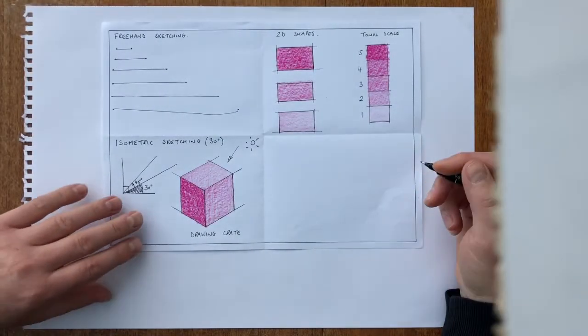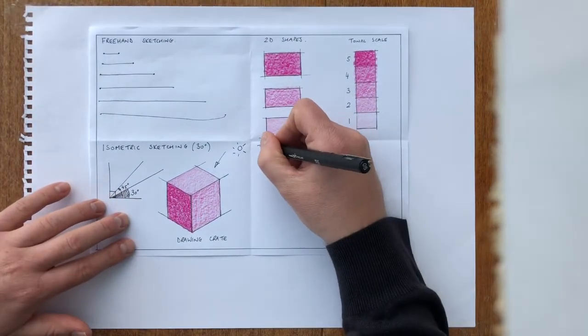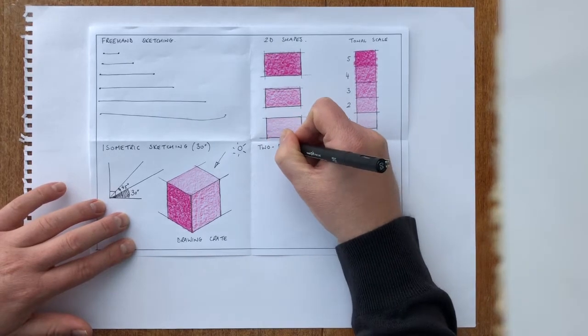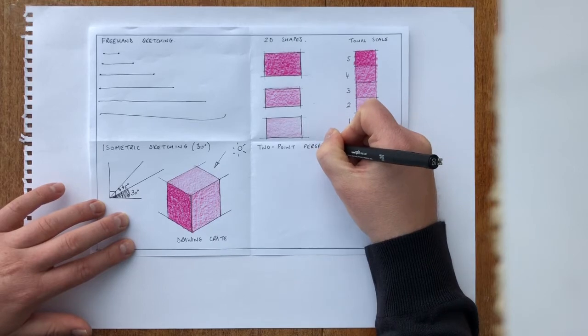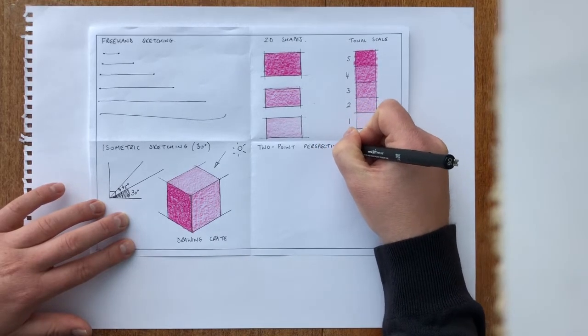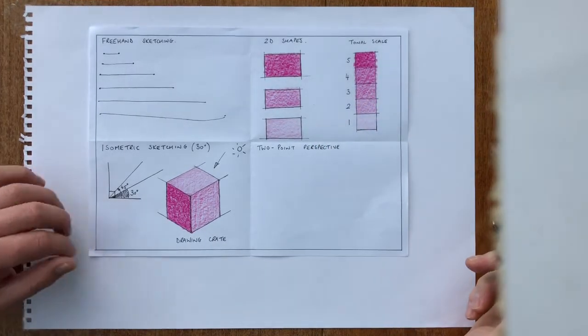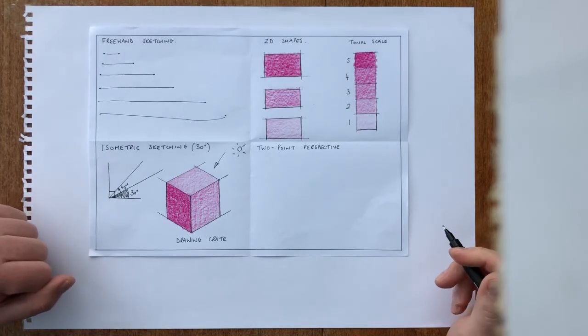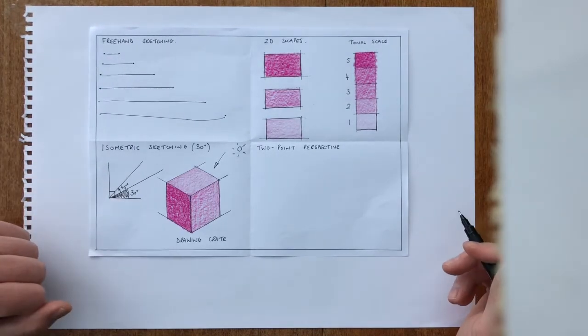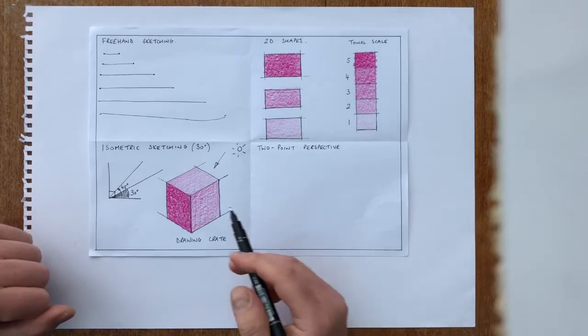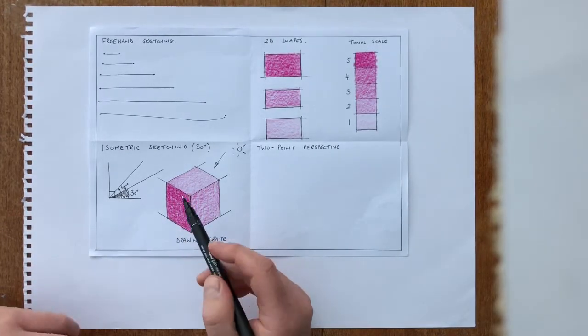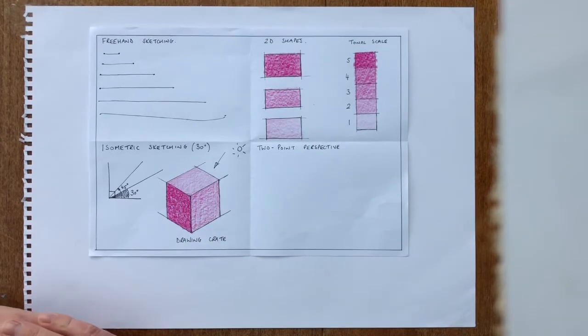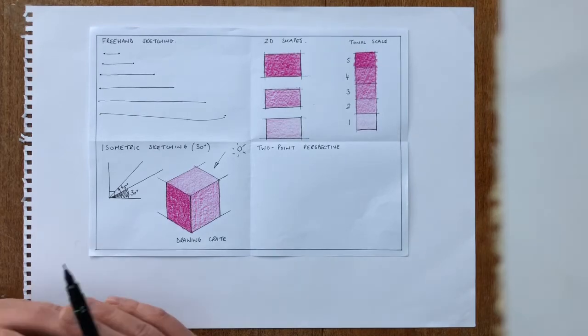The final technique we're going to look at is two-point perspective. Two-point perspective is a technique which is more natural. It's how the world is actually represented. Isometric is a good technique for representing or detailing objects because you can see the three sides of the box nice and clearly. Two-point perspective, what you'll find is things get narrower.